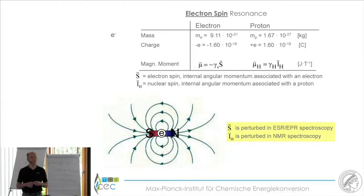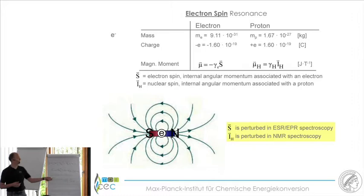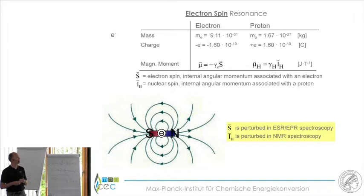Spin is a general property of most elementary particles, particularly the electron. The electron is a spin-one-half system. It can be thought of as a little magnet with a north pole and a south pole. I want to give you two examples — two classical experiments that people have done to detect spin and to visualize that something like spin must exist.